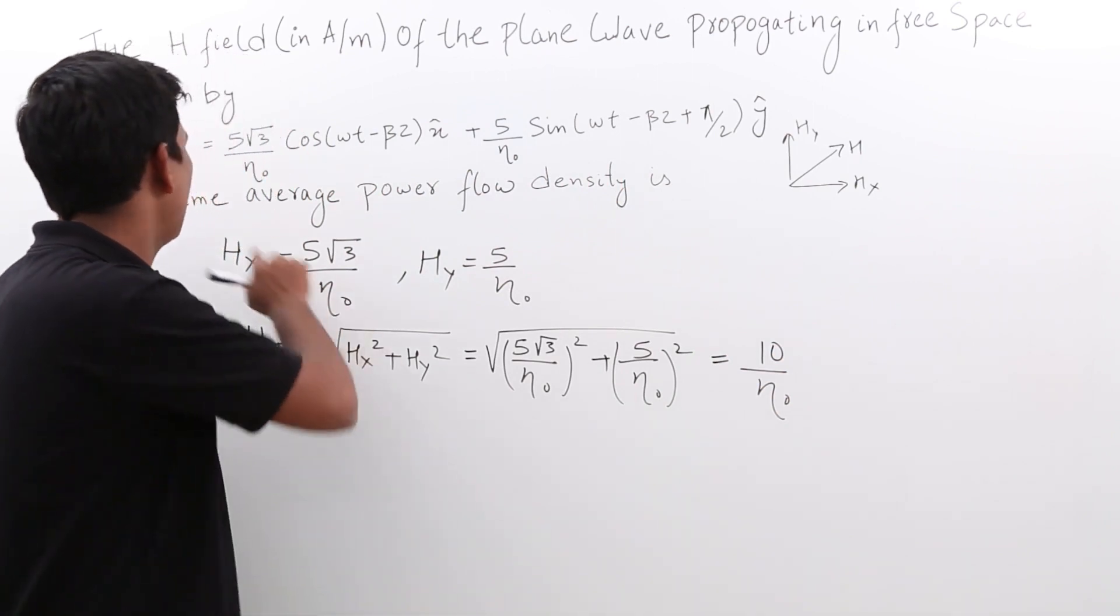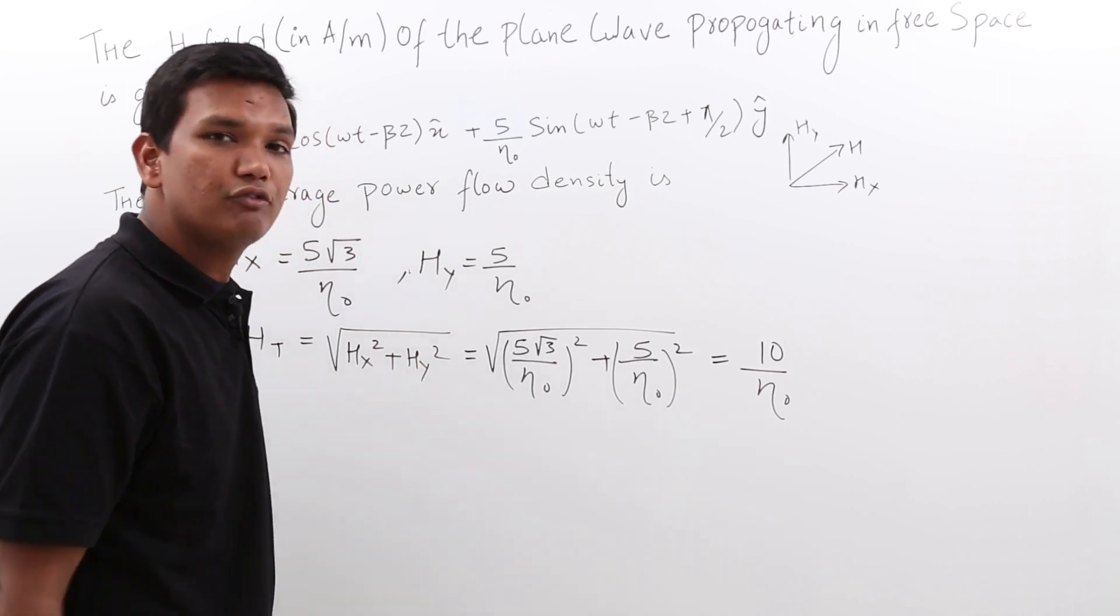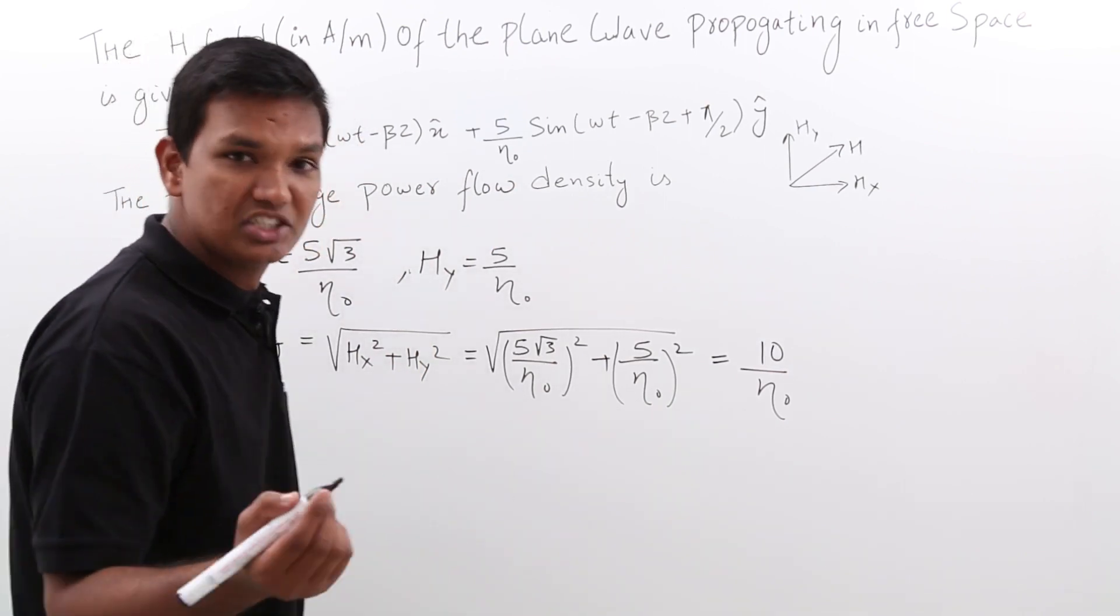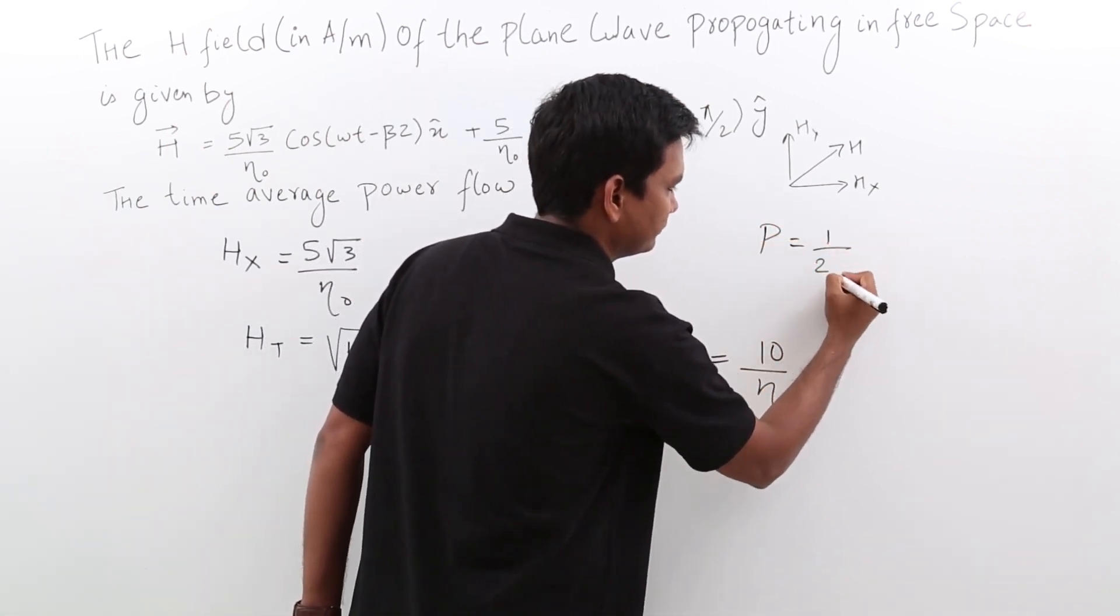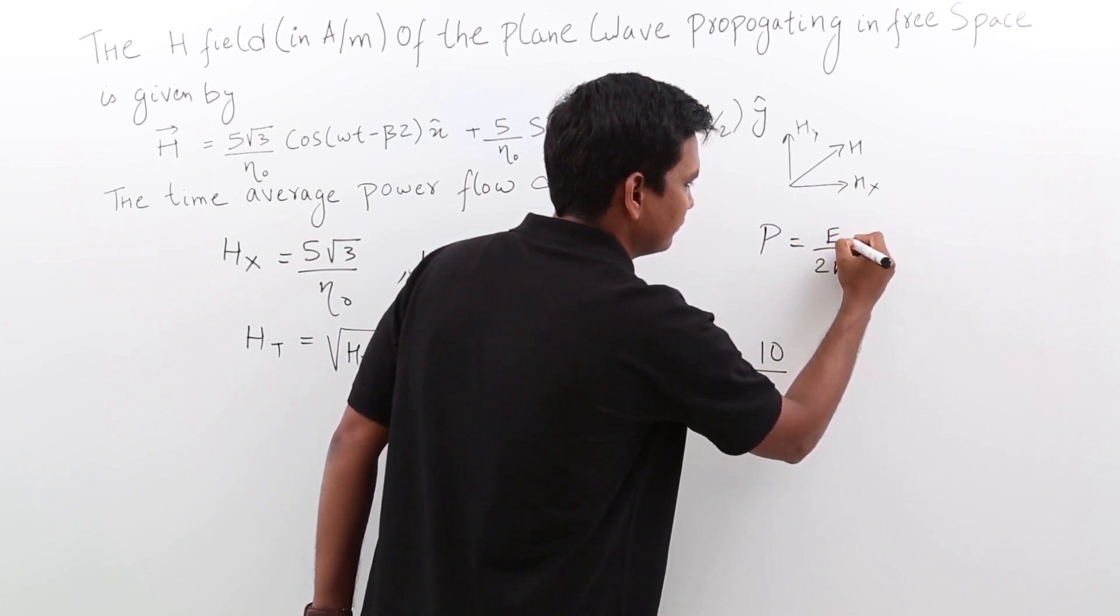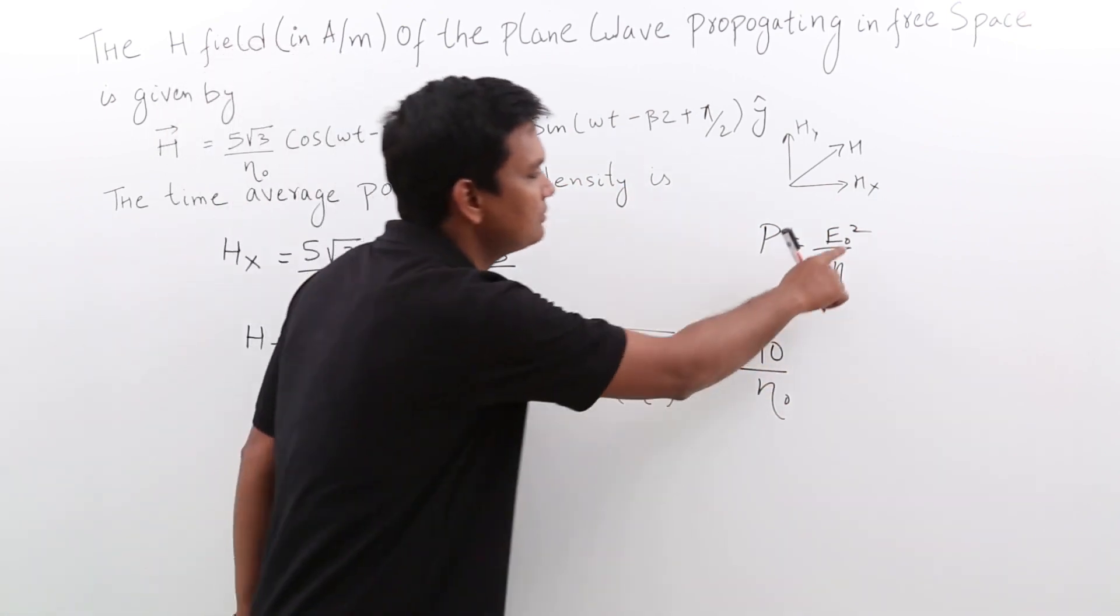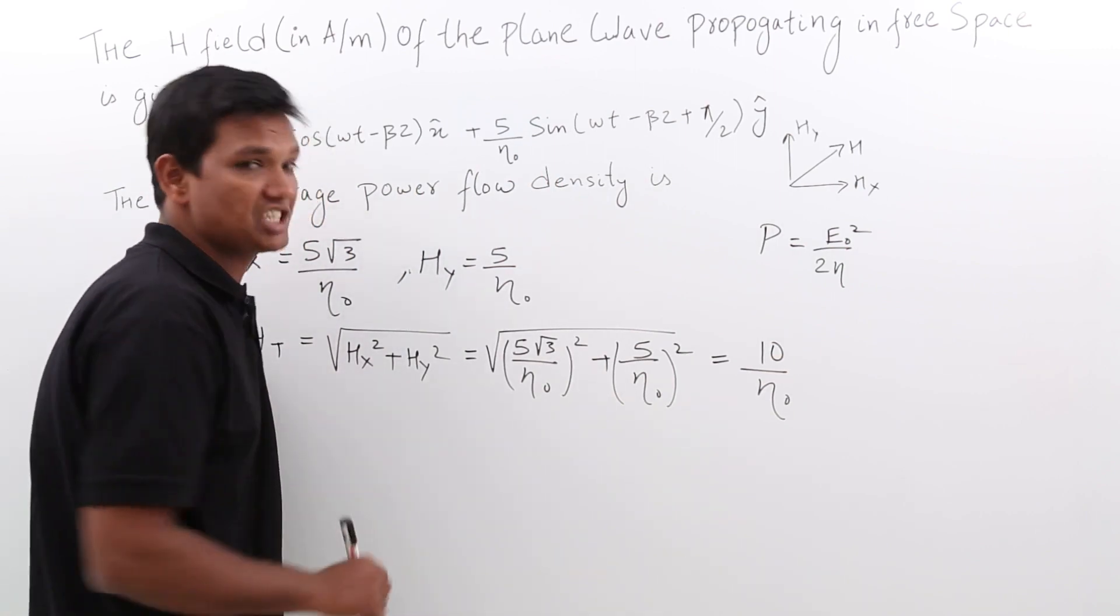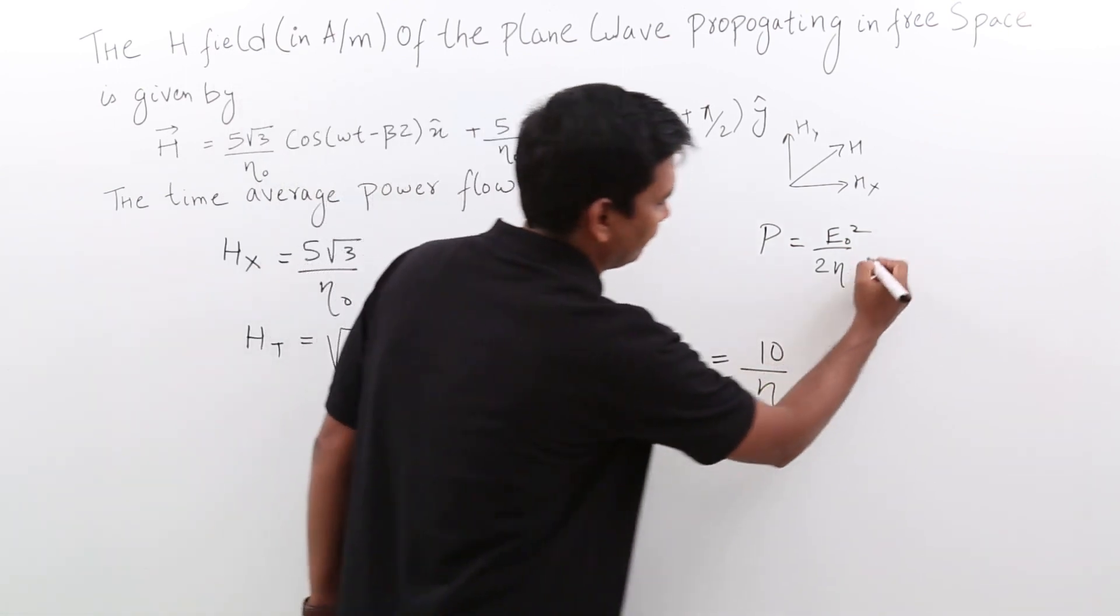Now, what I have to find is the time average power flow density. And we have already seen for a lossless medium what is the time average power density. It would be given by the general formula. This is time average power density, but this is in terms of E naught. But we do not have E naught. We have H naught. So I have to convert that equation into H naught. Let us write that.